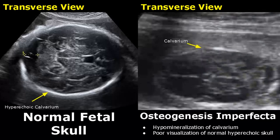In a fetus with osteogenesis imperfecta, hypomineralization of the calvarium occurs. We do not see the normal hyperechoic skull here, because the mineralization of the calvarium is not adequate.